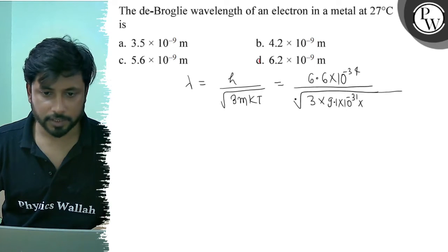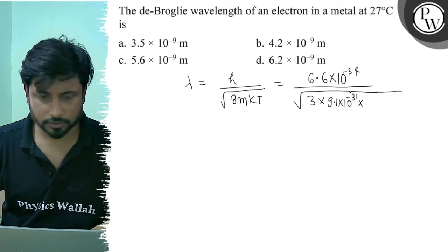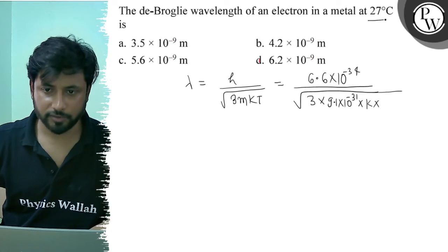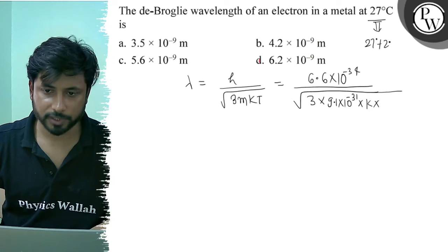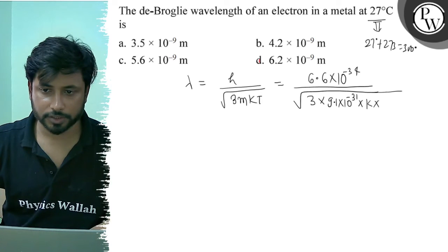here, our constant, Boltzmann constant k, and temperature into Kelvin. If we convert this, 27 plus 273 is 300 Kelvin.